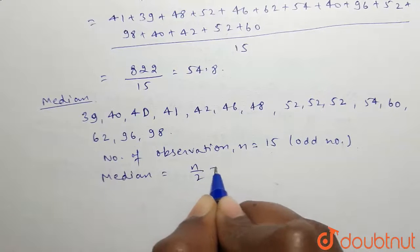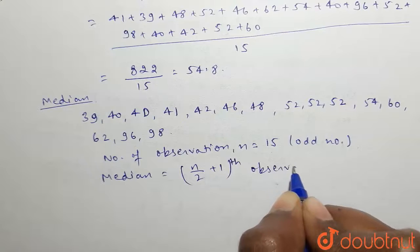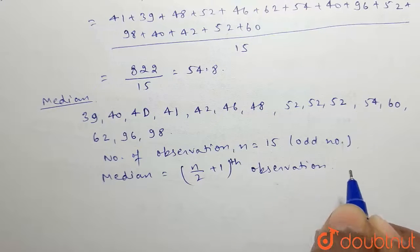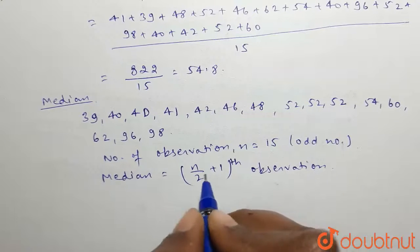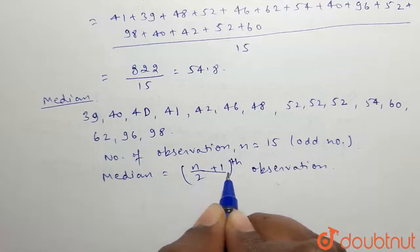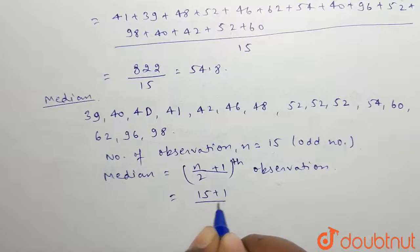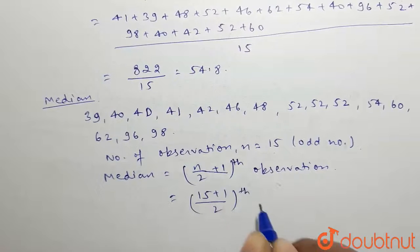Here n is 15, so (15+1)/2 th observation. 15 + 1 is 16, divided by 2 is 8. So we need the 8th observation.